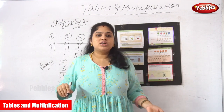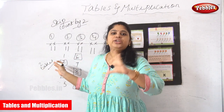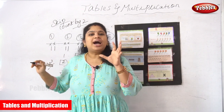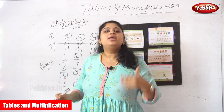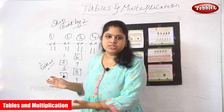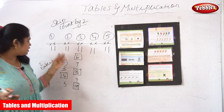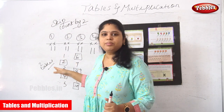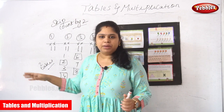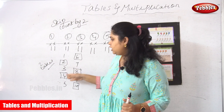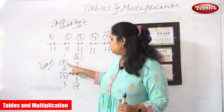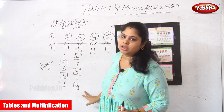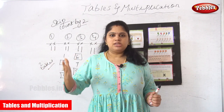Skip count by two is actually introducing the second table through the concept of skip counting. The idea behind multiplication is addition. We are just counting numbers like one, two, three, four, but we are avoiding the in-between numbers and taking only every second number — one, second number, one, second number — all the way through.